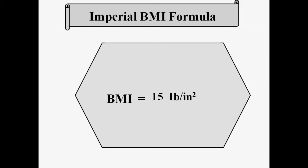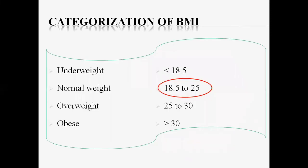Now we have to see in which category the BMI of Ishaal falls. We have different categories: underweight, normal weight, overweight, and obese. Since Ishaal has a BMI of 15, she falls in the underweight category, because for underweight the BMI is less than 18.